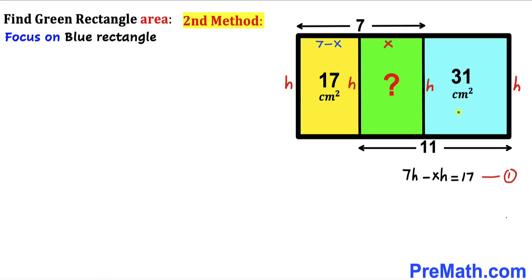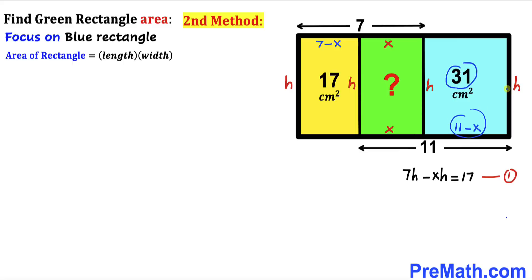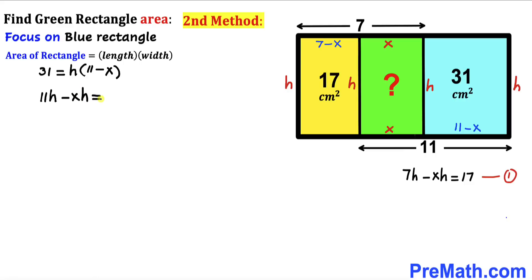Now let's focus on the blue rectangle. Its width on the green side is x, and the whole distance is 11, so the blue rectangle's width is 11 minus x. Its area is 31, so 31 = h × (11 − x), which expands to 11h − xh = 31. Call this equation 2.